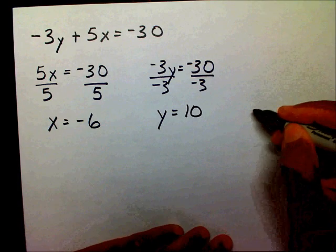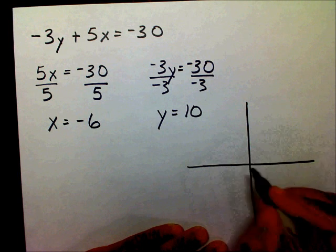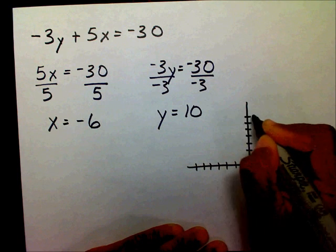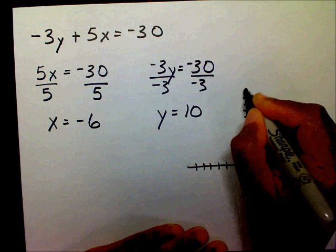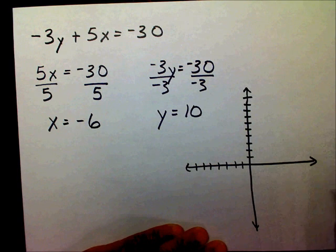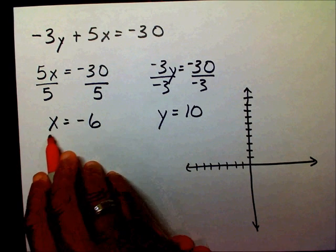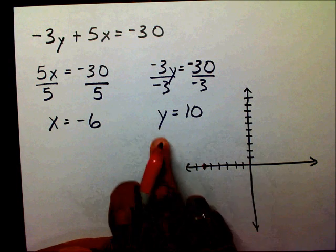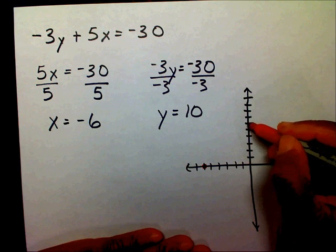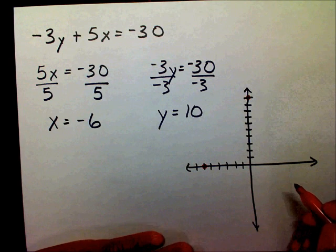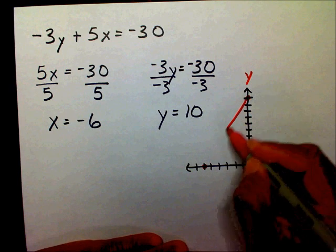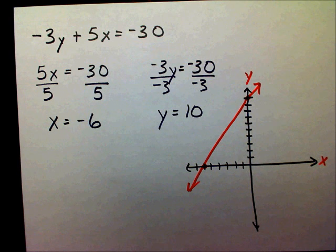If I want to graph it — my x-intercept is negative 6, so I'm going to put a dot on negative 6. My y-intercept is positive 10, so I'm going to put a dot on positive 10. Now I could draw my line, and I will. There are my x and y intercepts.